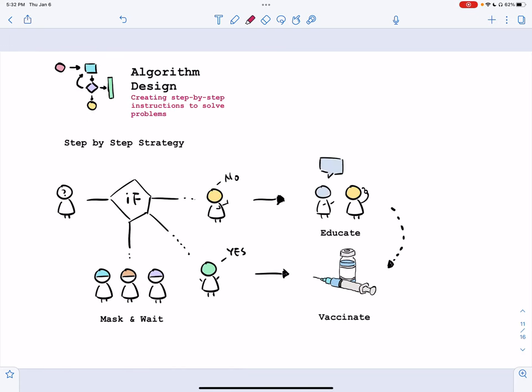Then finally, with algorithm design, we create a step-by-step strategy to figure out how to do this. So whenever we have a person, we'll kind of run through this algorithm.